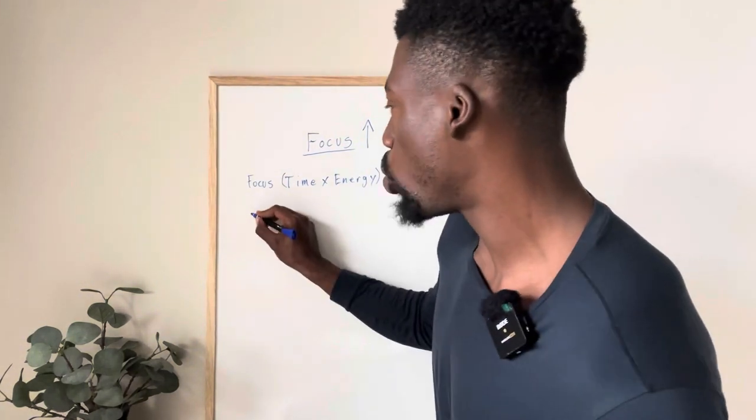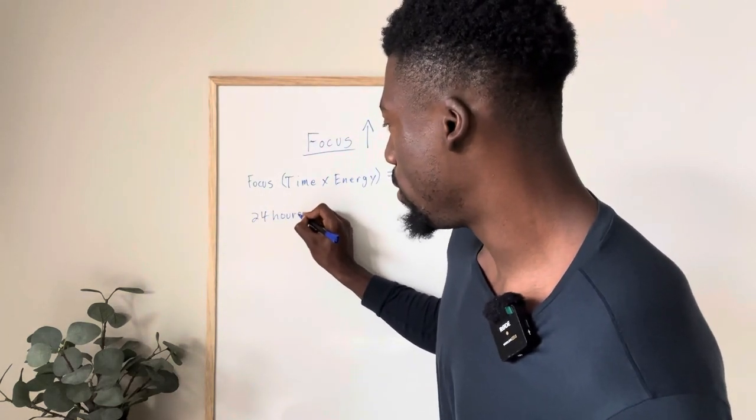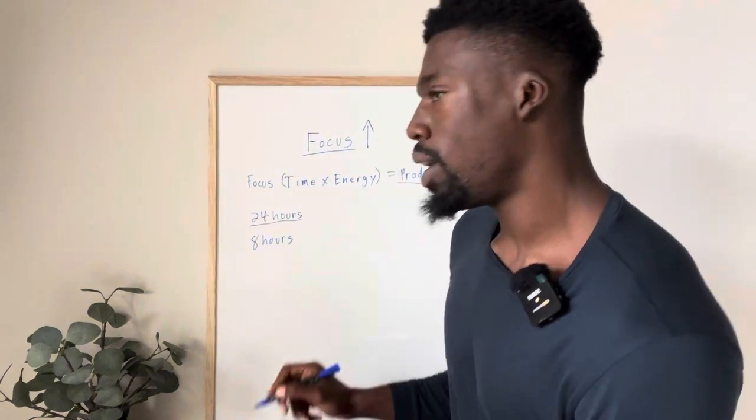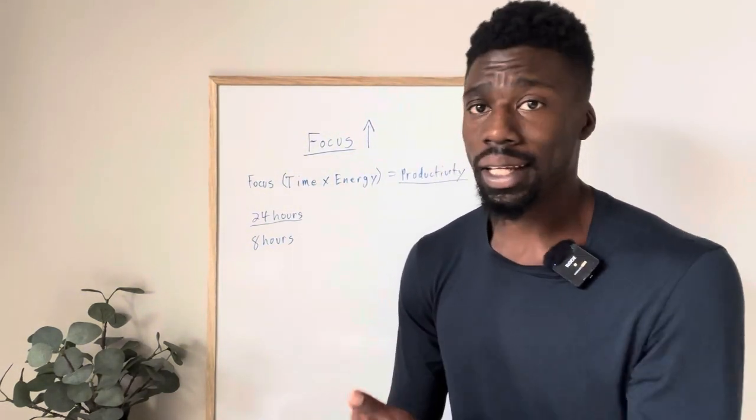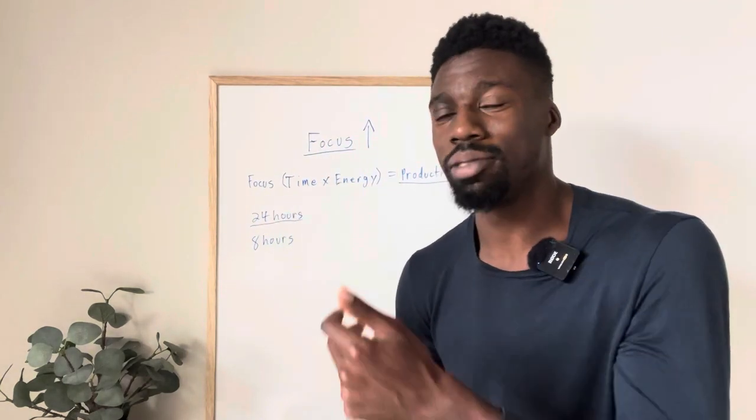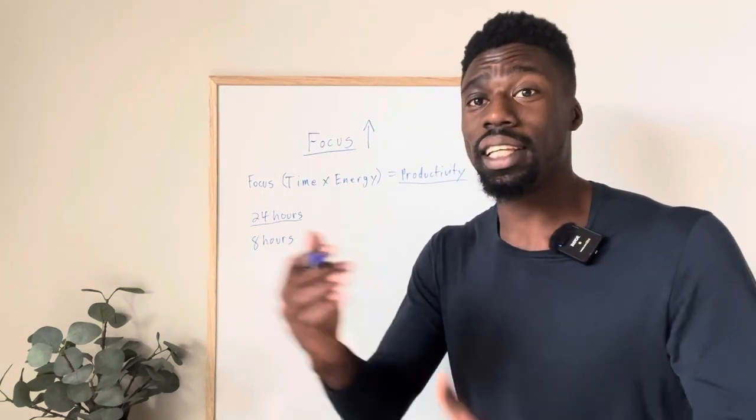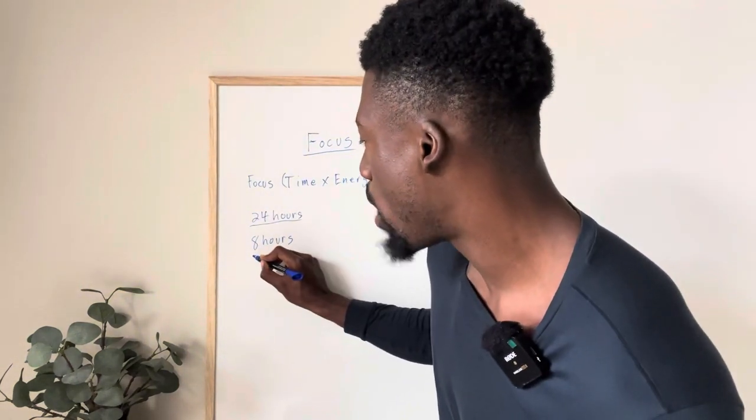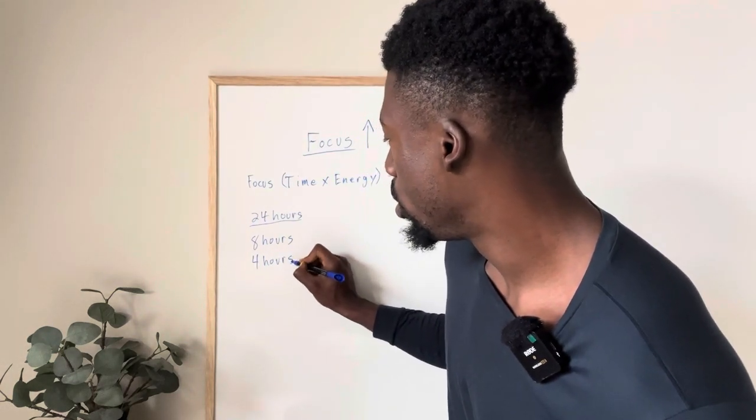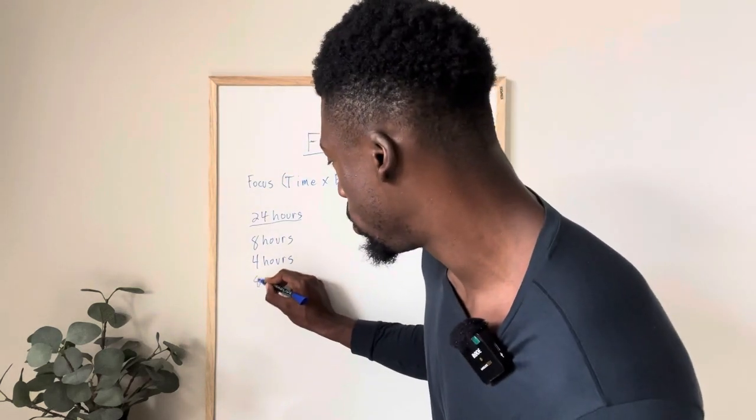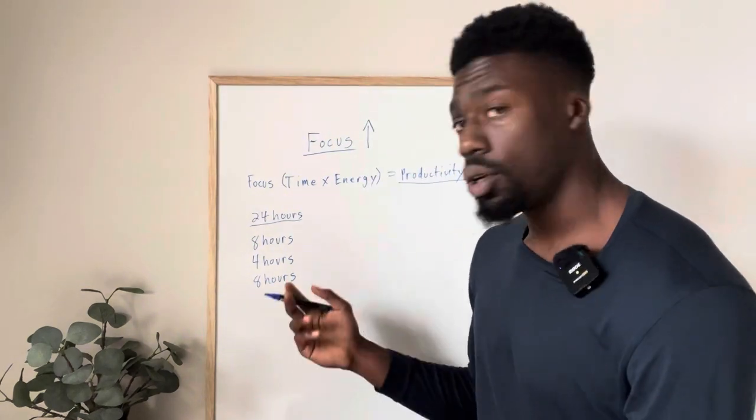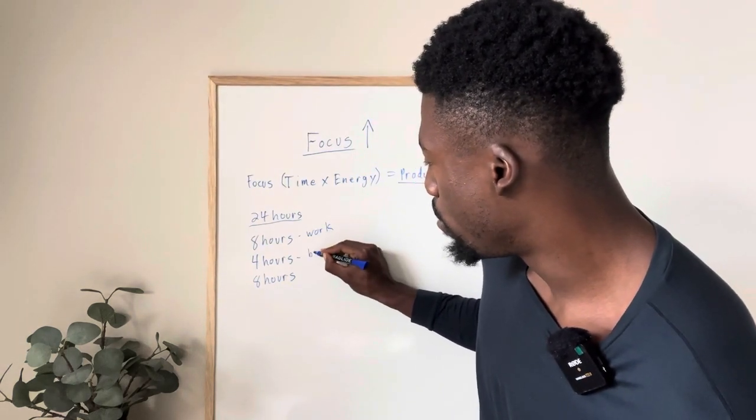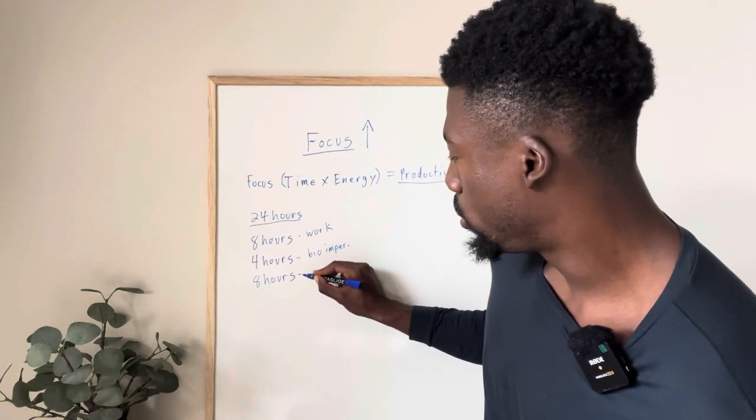Because we only have a finite amount of time and energy. These are limited commodities. Breaking down a day, we have 24 hours. A lot of you are probably already working for eight hours of that 24. Then you have your biological imperatives like eating, showering, talking to the wife or girlfriend, social things—anything to keep you sane and your body running. That'll probably be anywhere from four to six hours, let's say four hours.